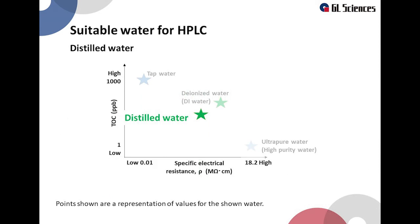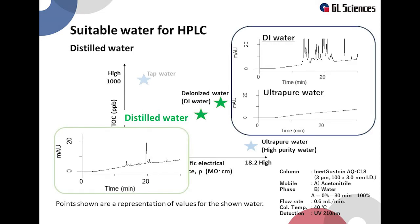Next we will show distilled water. Here is a rough image of the TOC and specific electrical resistance values for distilled water. The number of impurity peaks has decreased significantly from deionized water, but there are still many impurity peaks when compared with the chromatogram of ultra-pure water.